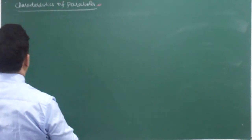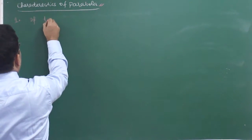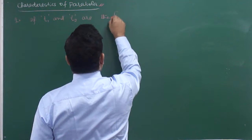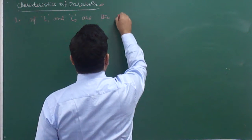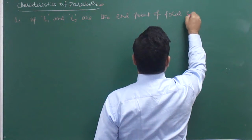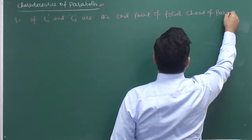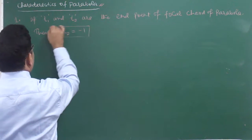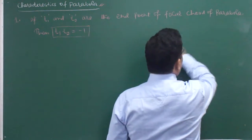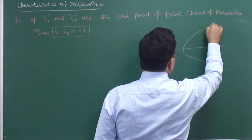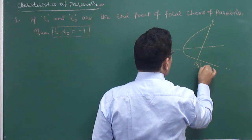First of all, we are going to discuss one characteristic. If T1 and T2 are the endpoints of a focal chord of a parabola, then T1·T2 is equal to minus 1. This is one property I have to discuss. Suppose this is a parabola and P and Q are the endpoints which are T1 and T2.